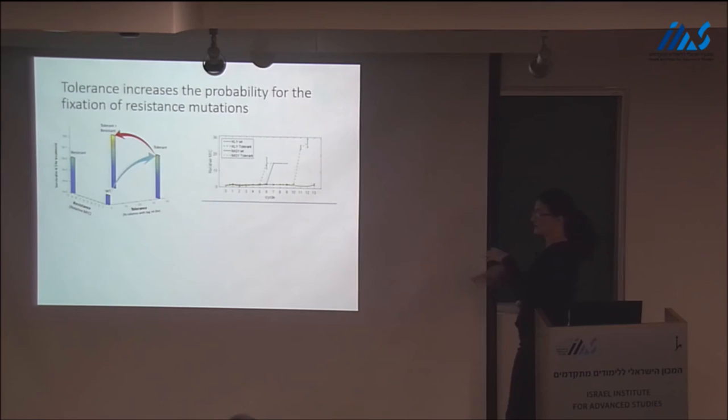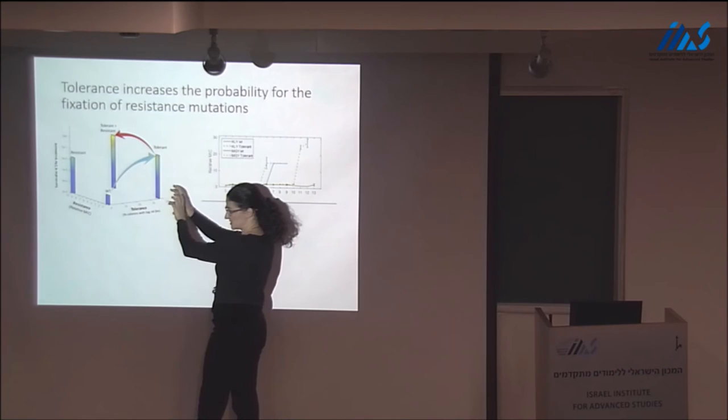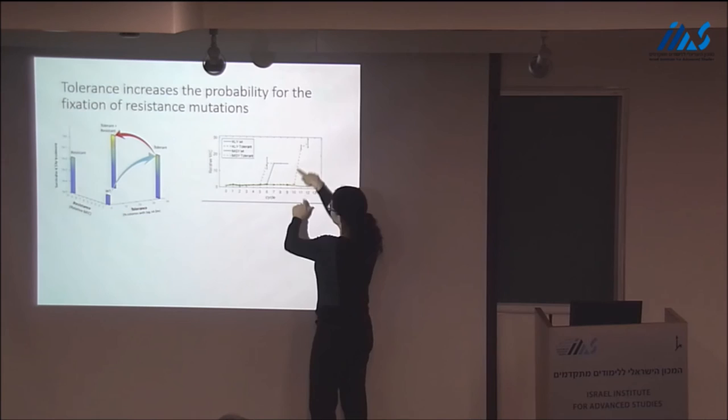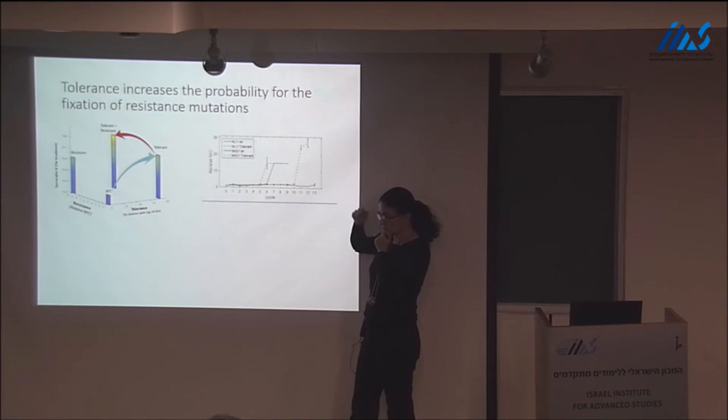To confirm, we redid the whole evolution experiment starting from a tolerant strain versus a wild type strain — they differ by just one mutation. Each time, the tolerant strain evolved resistance faster than the non-tolerant strain. So tolerance is really a stepping stone to evolve resistance. Once you are tolerant, you are just one step away from evolving resistance.